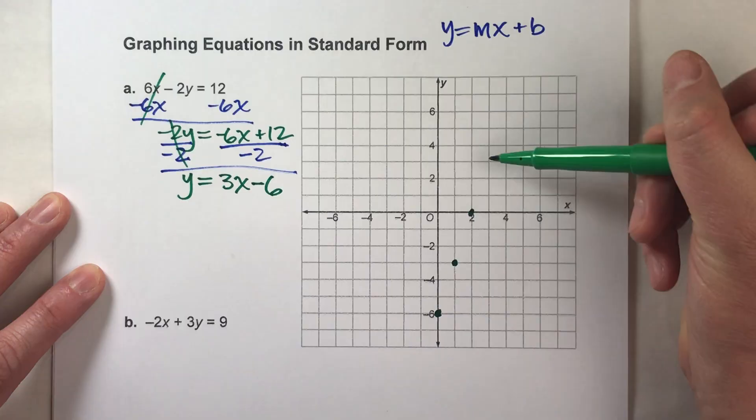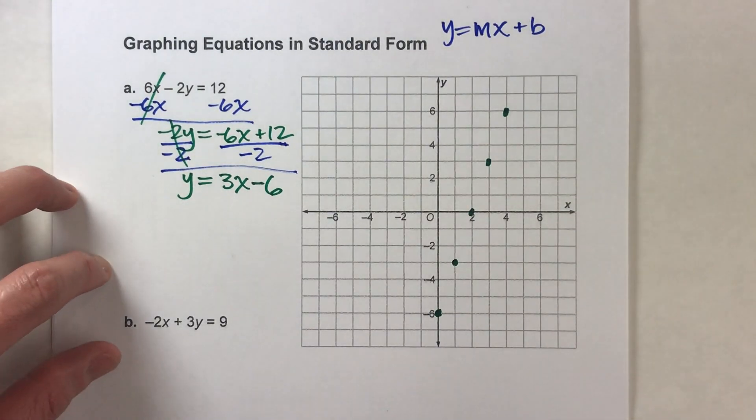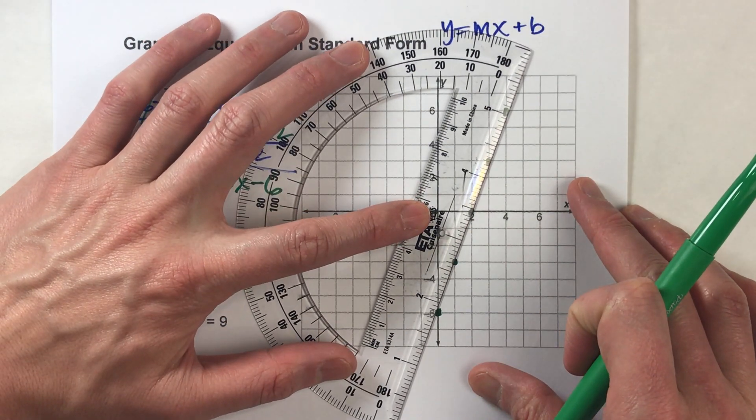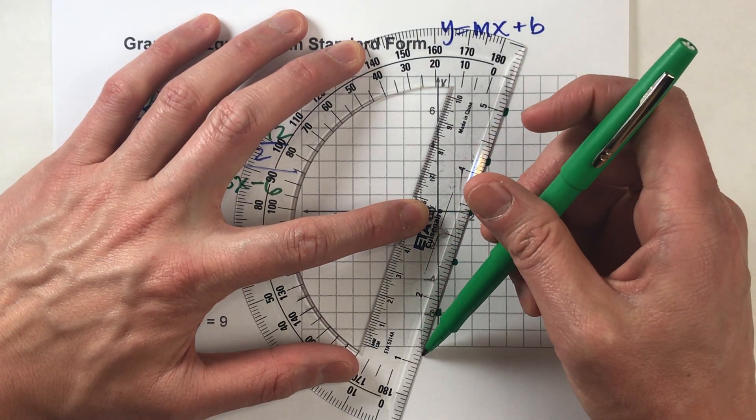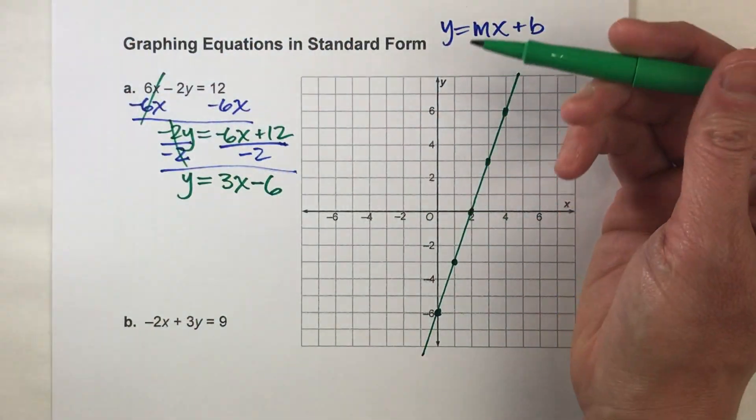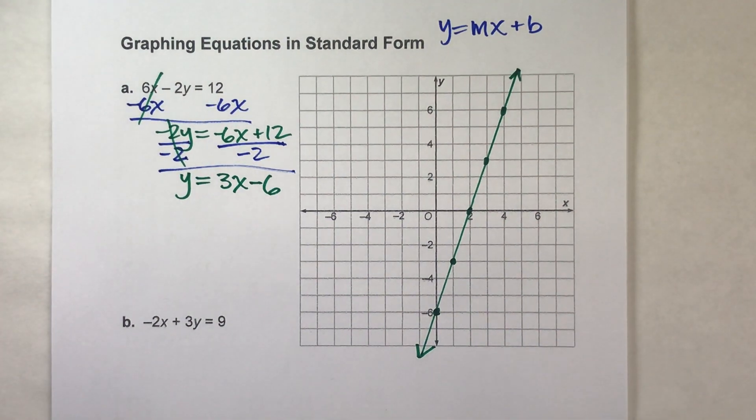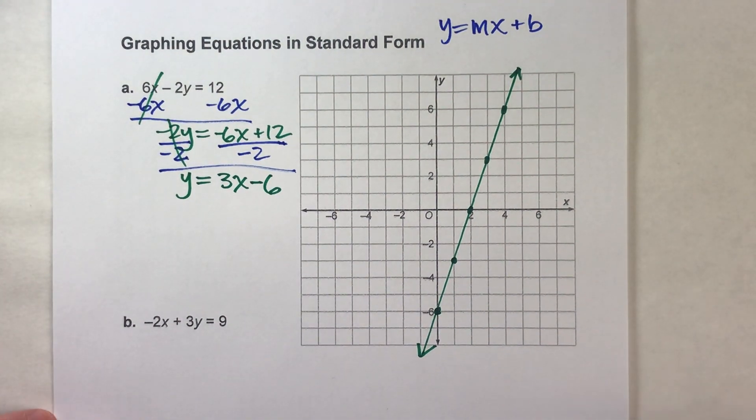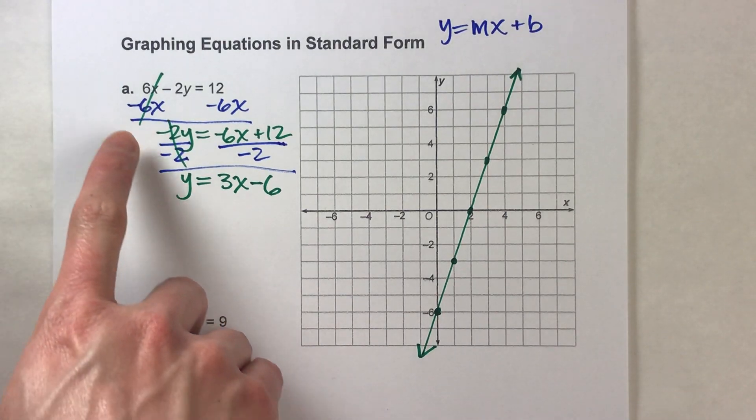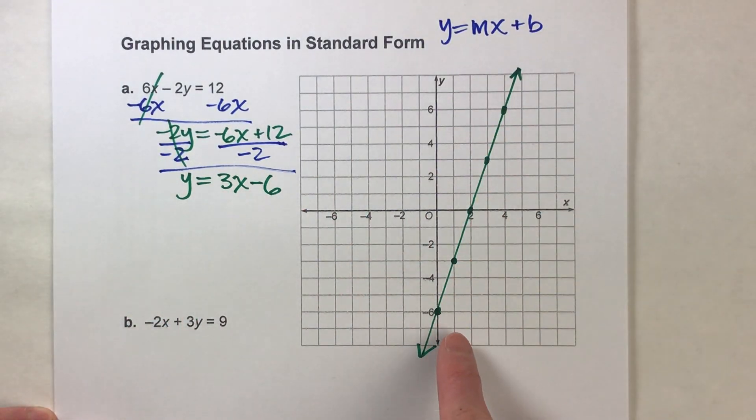Up 3, right 1. Up 3, right 1. Up 3, right 1. There we go. And with my ruler I can draw in my line, and there it is. Alright, so notice it does take a little bit of work to be able to do that, but once we do those two steps, we've got our equation in slope-intercept form and then we can graph it pretty easily.